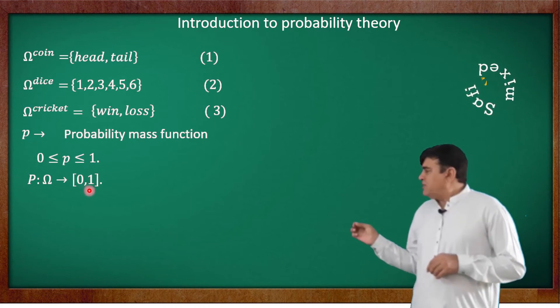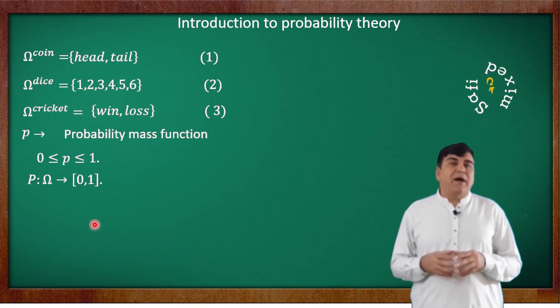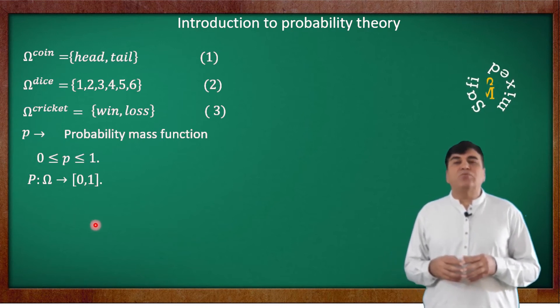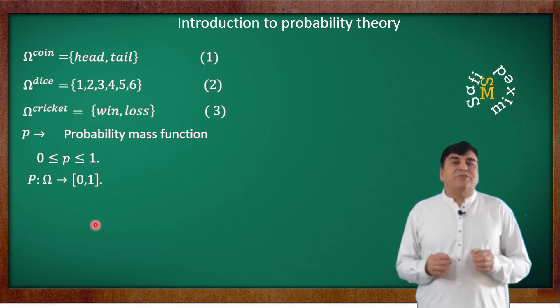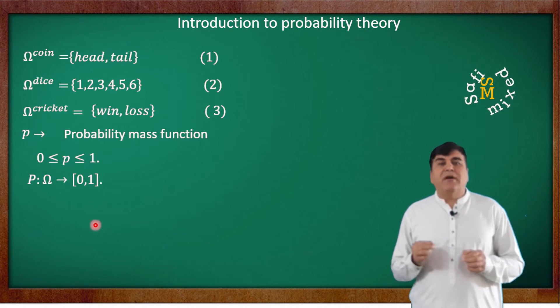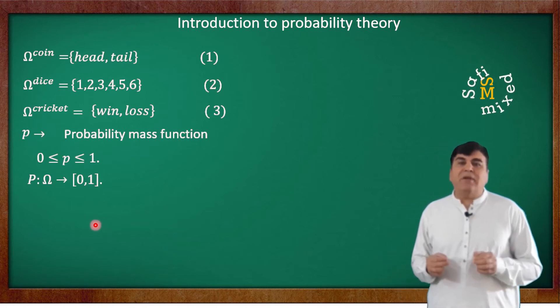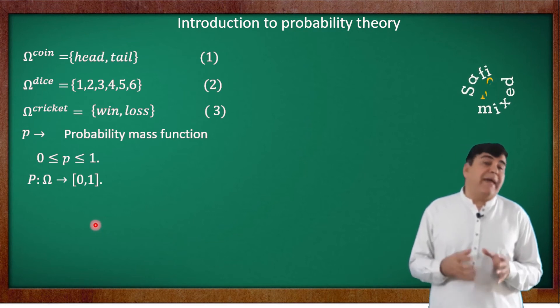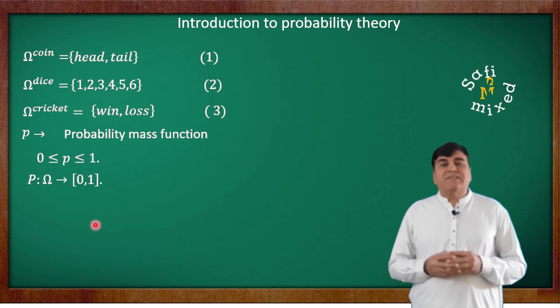This notation means that P is a weird function on space Ω that has values from 0 to 1, where the value 0 ensures the 100% not happening of an outcome and the value 1 ensures the 100% happening of an outcome of the events. This weird function is also called mass function.